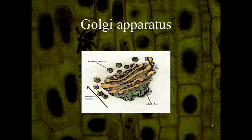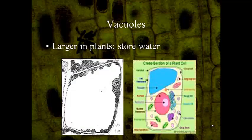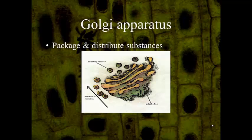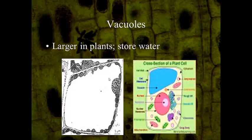The Golgi apparatus looks like a stack of pancakes. What it does is package and distribute substances, preparing them to be shipped out of the cell. That's why you find vesicles right next to the Golgi. The Golgi takes in material, packages it into vesicles, the vesicle moves to the cell membrane, and pushes the waste out of the cell through a process called exocytosis.